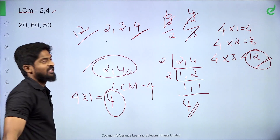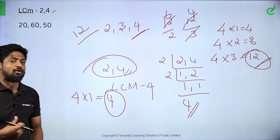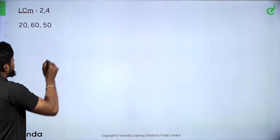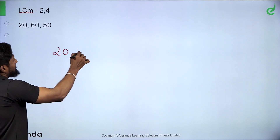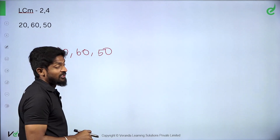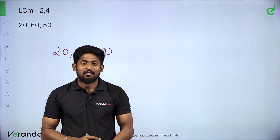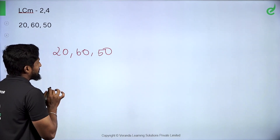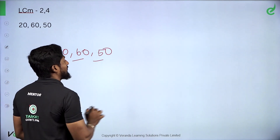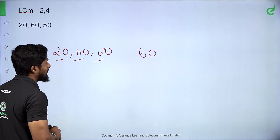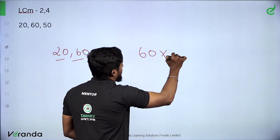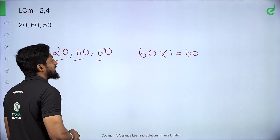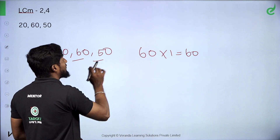The LCM is 12. Similarly, for numbers like 20, 50, and 90, we find the smallest number divisible by all of them, which becomes the LCM. For example, the LCM of 20 and 50 can be found by checking common multiples.